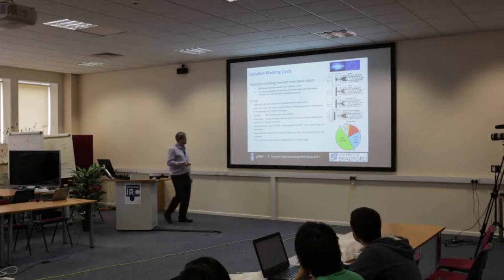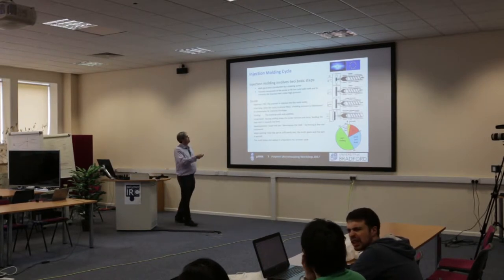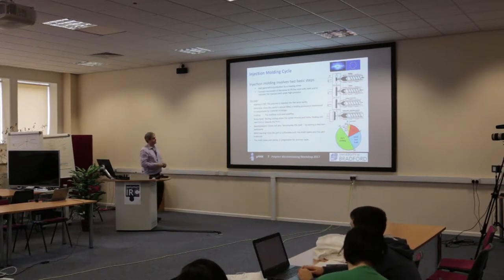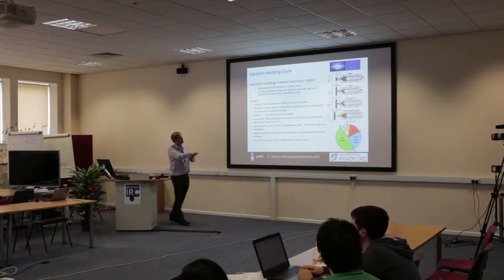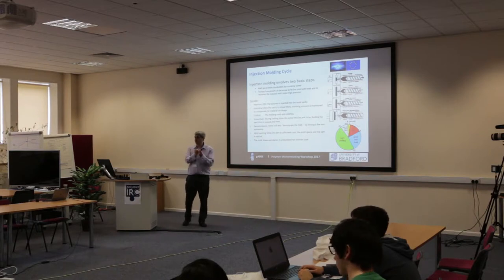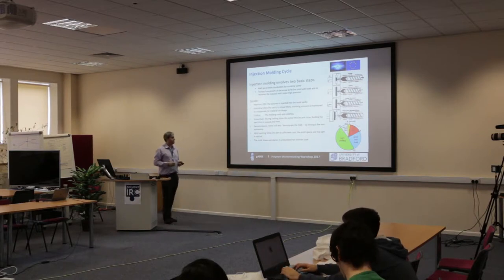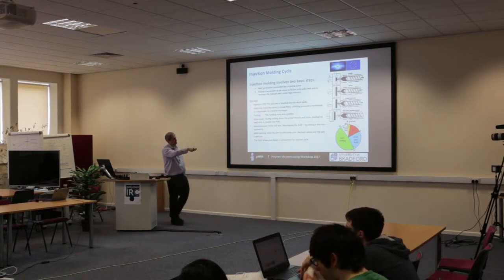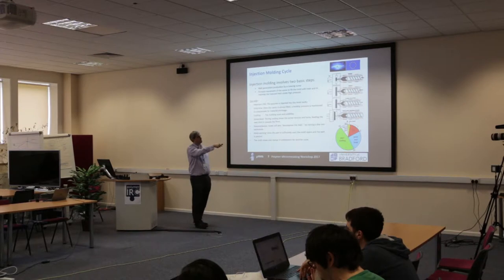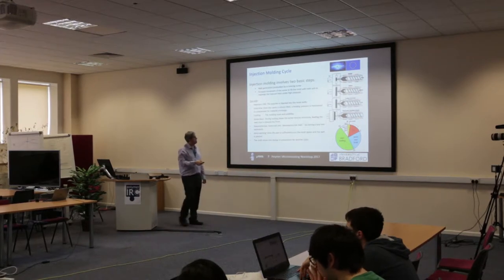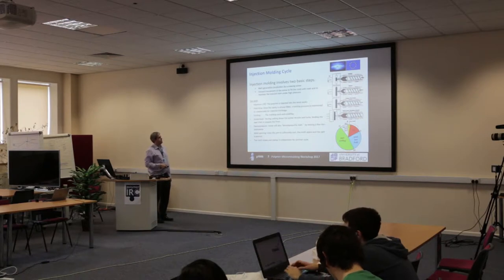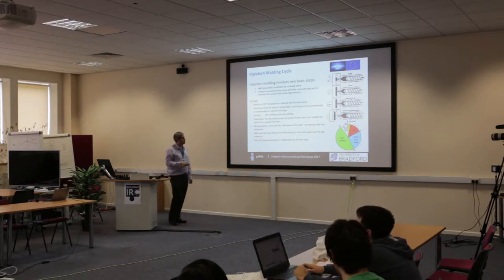Looking at the individual stages in the process, there are two basic steps: melt generation by the rotating screw, and then the forward motion of the screw that forces material into the cavity to form the shape of the part. We can break up this cavity filling phase into a number of key parts of the injection molding cycle.